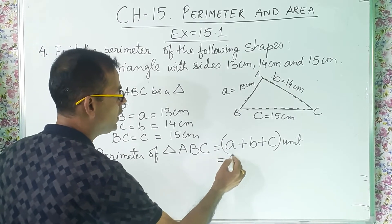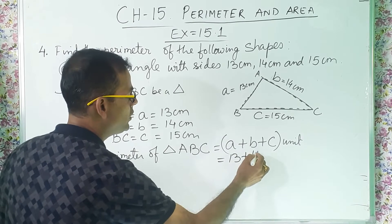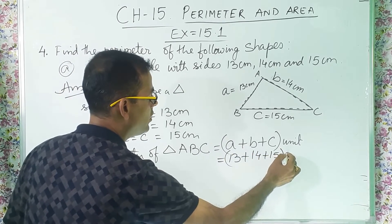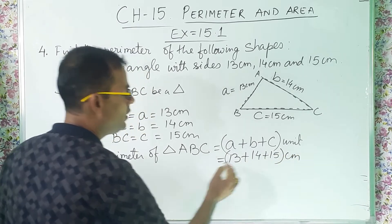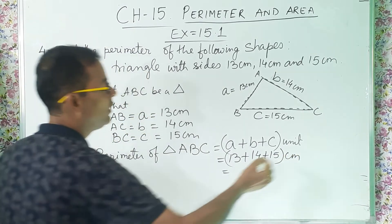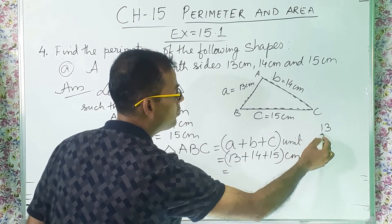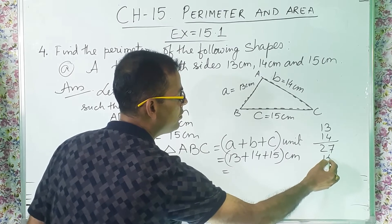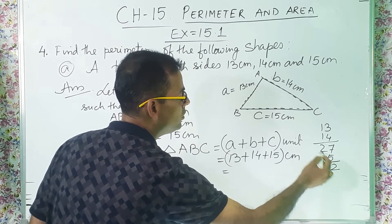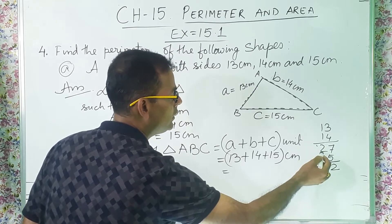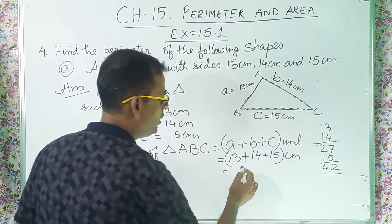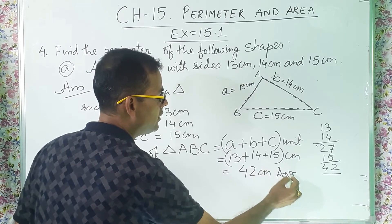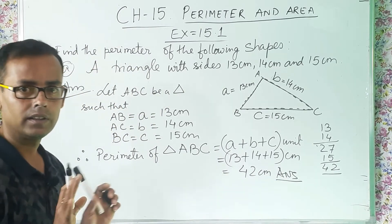Now a is how much? 13. B is how much? 14. C is how much? 15. And then it is what? Centimeter. Now you have to add it up. So 13 plus 14, how much? 27, and again 15. So 12, 7 plus 5 is 12, 1, 2, 3, 4. So what you get? 42 centimeter. And this is the answer.